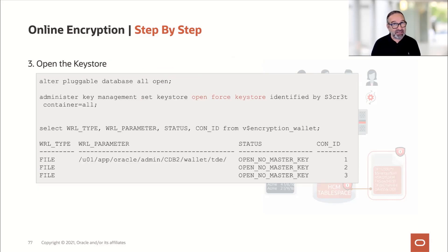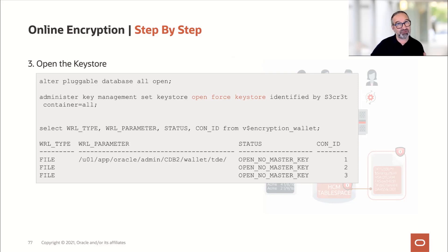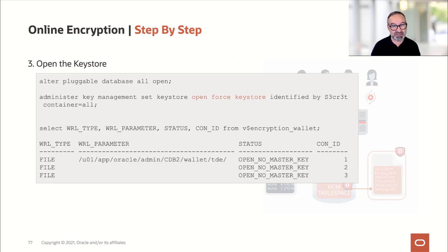The next step is: I have a key store, I need to open it. For opening the key store I have to specify the password — ADMINISTER KEY MANAGEMENT SET KEYSTORE OPEN IDENTIFIED BY <password> FOR ALL CONTAINERS. Now you see a change in the V$ENCRYPTION_WALLET view: it's open, but no master key is associated yet.